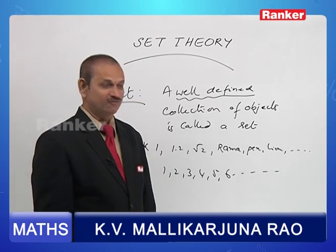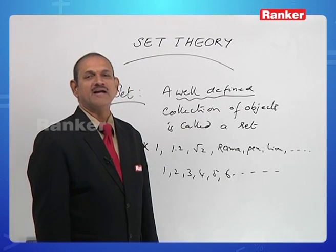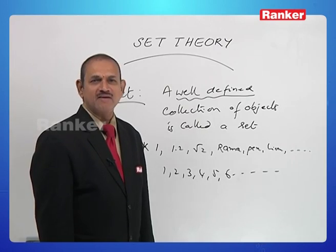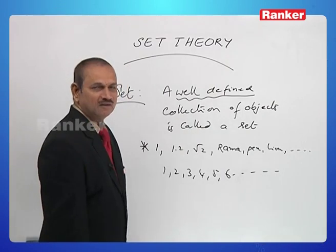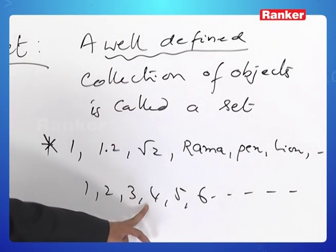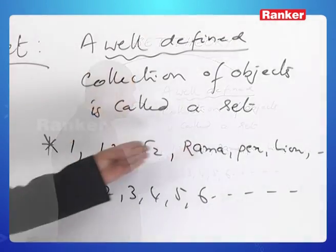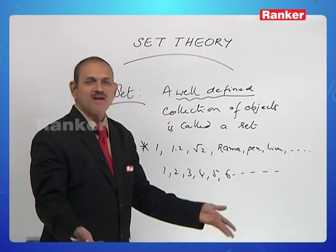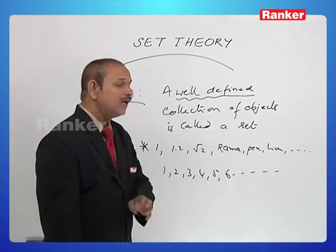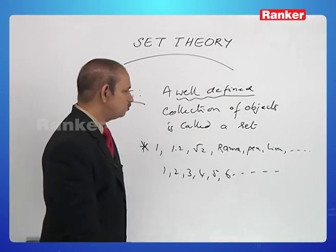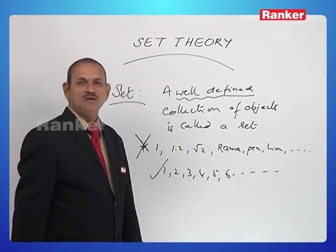There is a definition to the word well-definedness. A collection is said to be well-defined if it is possible to decide whether a particular object belongs to the collection or not. For example, does 1.3 belong to this collection? No, we can say no, perfectly. But does pi r squared belong to this collection? We do not know — we cannot decide whether that object, pi r squared, is an element of the collection or not. That is why this collection is not well-defined, whereas the natural numbers collection is well-defined.